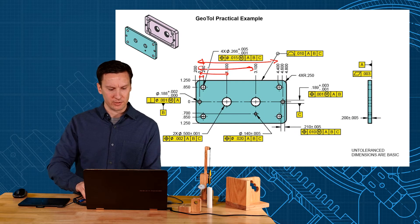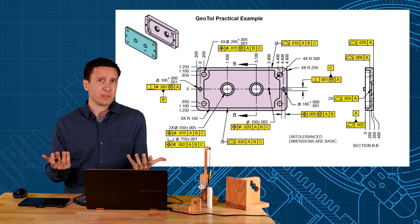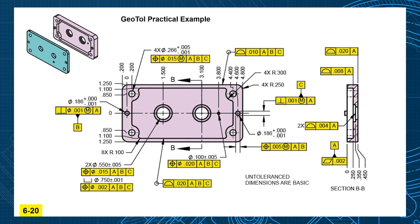Well let's look at the mating part for this. So the mating part has a very similar setup. The pin that we're aligning to, that is going to be our B feature.